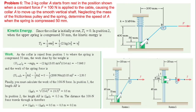We will start working on the kinetic energy. At position one, the initial condition has the collar at rest, so T1 equals zero. At position two, T2 equals half m times v2 squared.